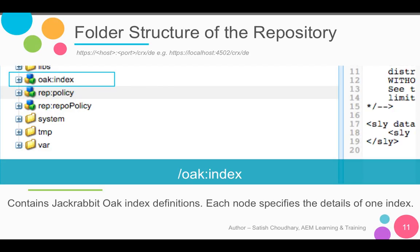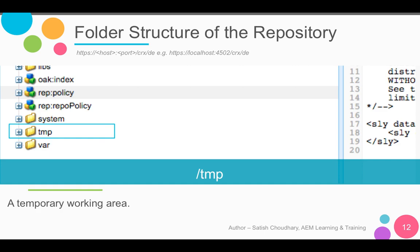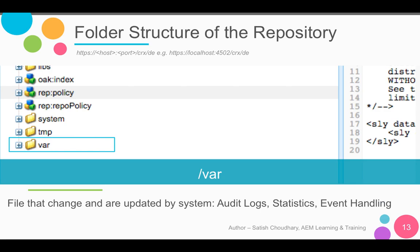Then we have oak:index. Oak index contains the Jackrabbit Oak index definitions — each node specifies details of one particular index. Slash tmp is a temporary working area in AEM; it's not generally used by the developer, it's just a temporary area used during executions. Slash var is a folder generally used by the system — it is used for changes and updates by the system, like audit logs, statistics, and event handling.